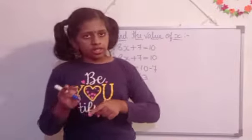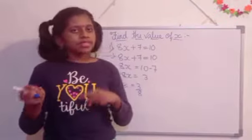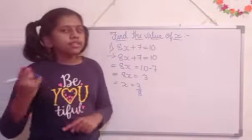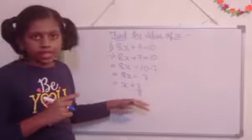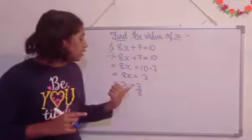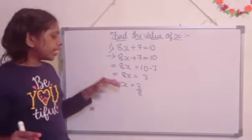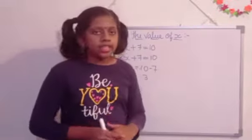So, it becomes division. Why? Because here 8x means multiplication. If it shifts, it means division, opposite sign. So, it comes to denominator. So, x is equal to 3 by 8. Here, no need of writing 8x because it will be wrong. You need to write x is equal to 3 by 8. So, now, let's simplify this.